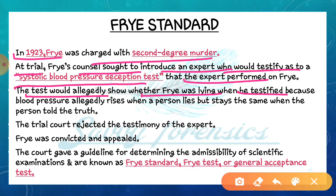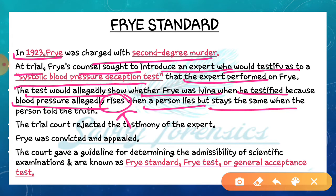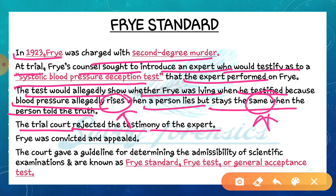Test کی report نے show کیا کہ Frye test کے وقت جھوٹ بول رہے تھے کیونکہ ان کا blood pressure rise ہوا تھا. اس وجہ سے trial court نے expert کی جو testimony اور report تھی اسے reject کر دیا. اور Frye کو convict کر دیا گیا، جس کے بعد اس case کو دوبارہ test کرنے کے لیے appeal کی گئی.